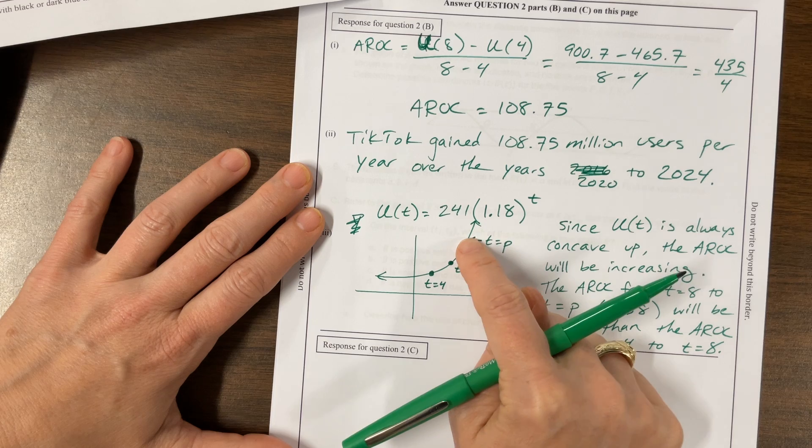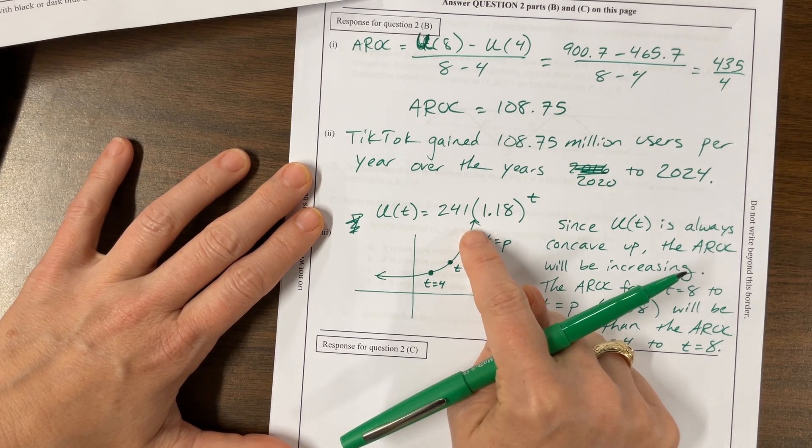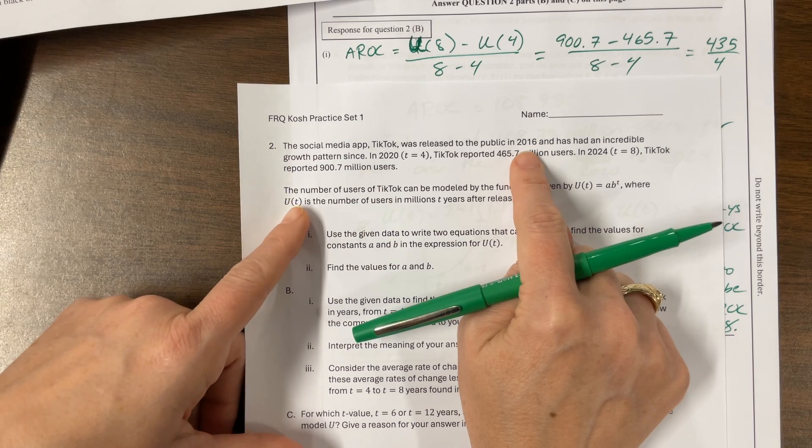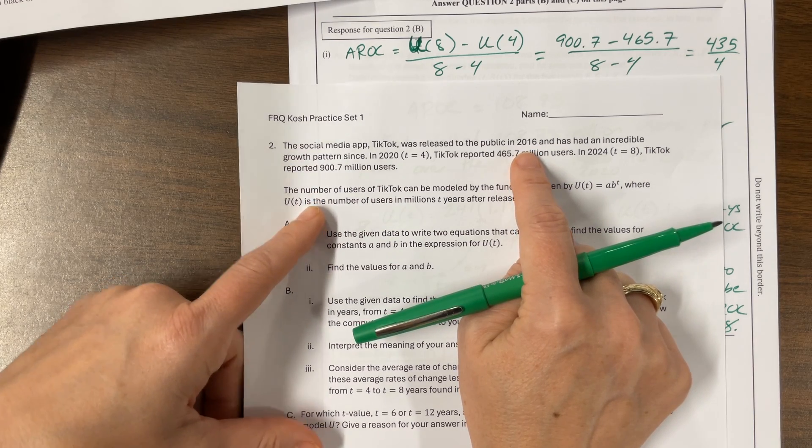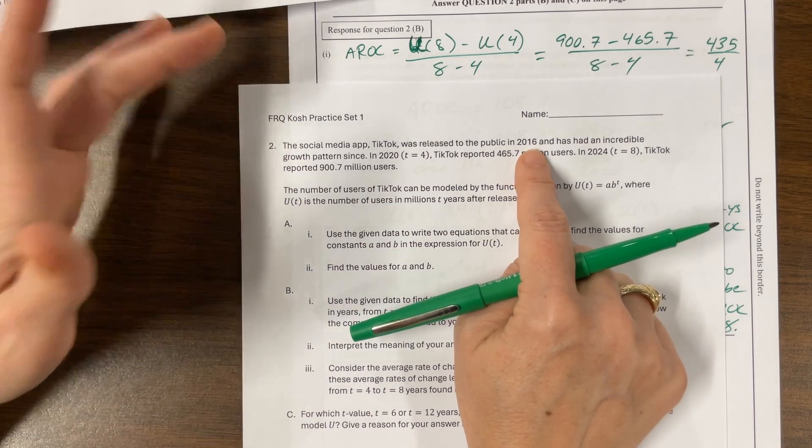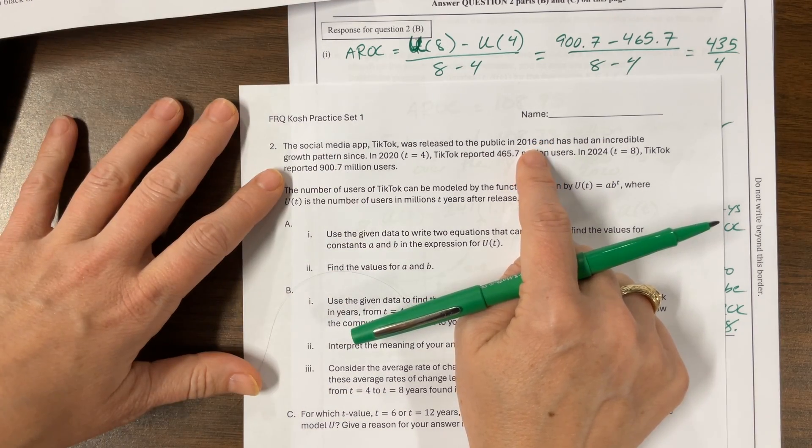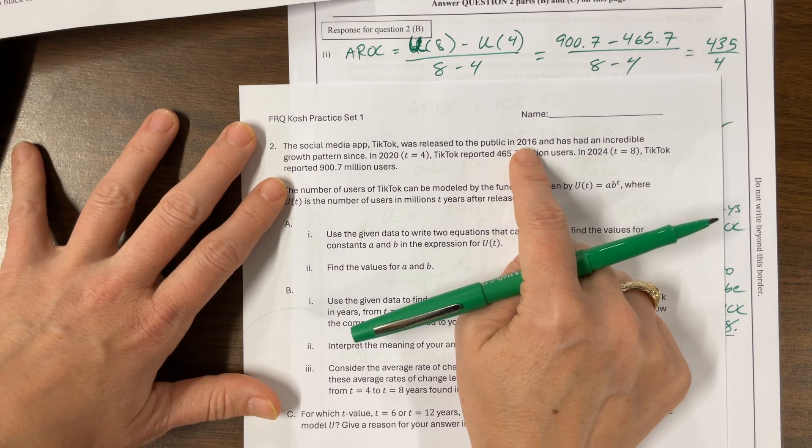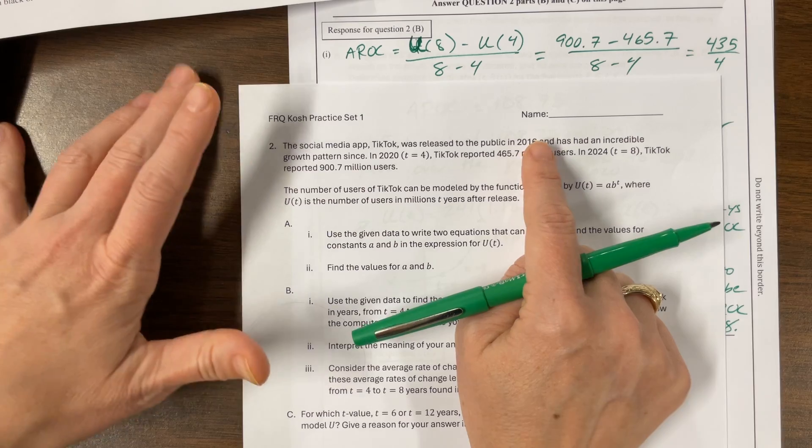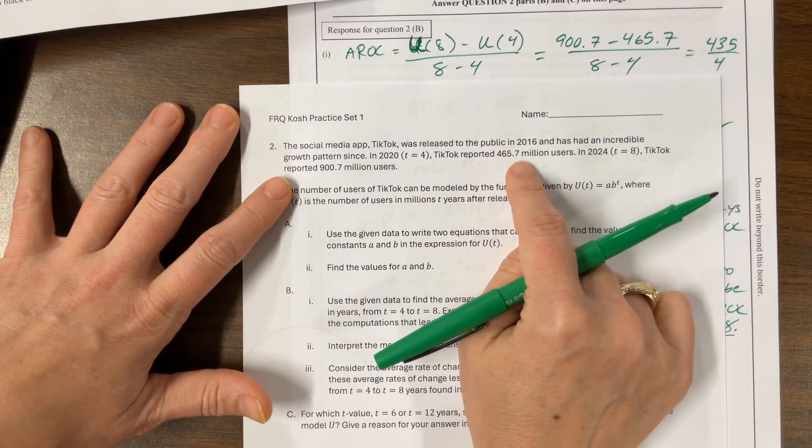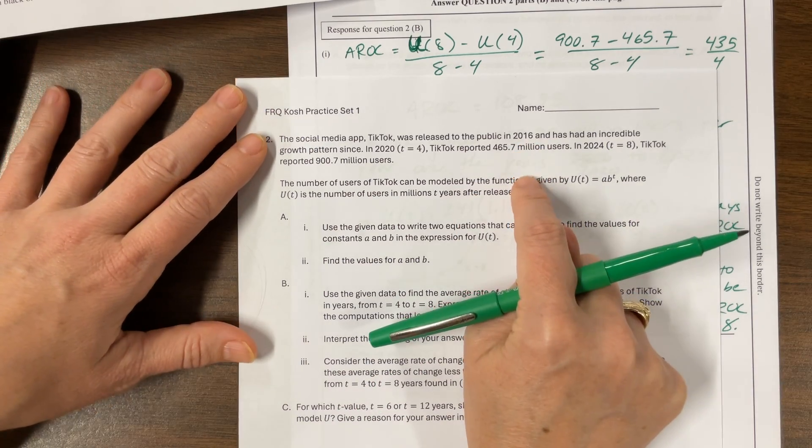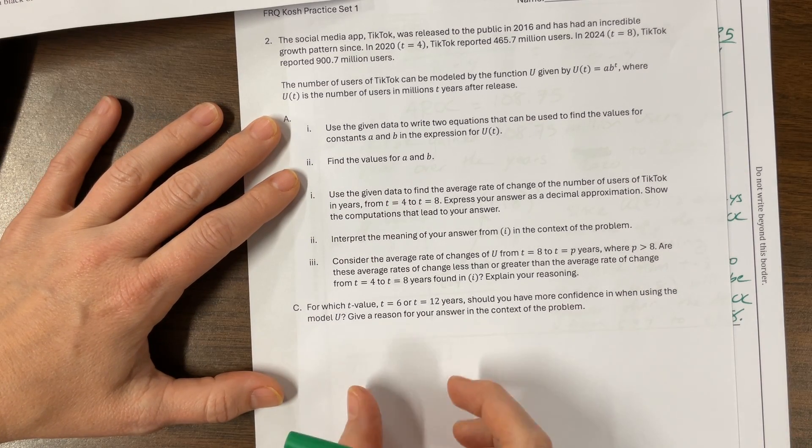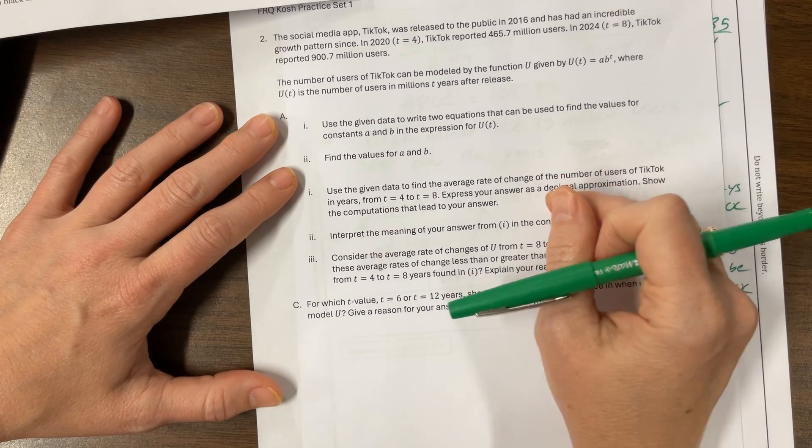At T equals 12, we're somewhere up here and we don't know. T equals 12 would be the year 2028. Who knows? Maybe TikTok is now for all the old people and all the young people have gone other places. Maybe there was something catastrophic happened. Point is, is that we don't know what can happen between now and 2028. So we are more confident with what we estimate within our data set, as opposed to what's outside our data set.